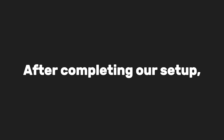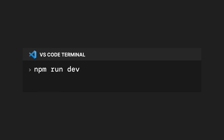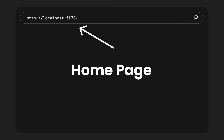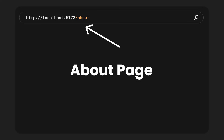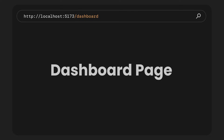After completing our setup, let's run our React app by typing npm run dev. On the home path slash, we can see our homepage, which is rendered by the App component. If we add slash about, it will navigate to the About page, which serves the About component. Similarly, on slash dashboard, we can see the Dashboard page rendering the Dashboard component.